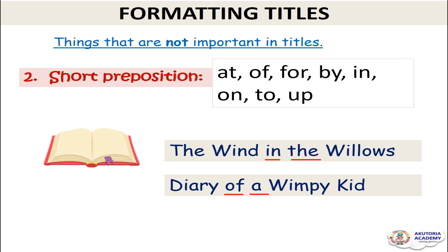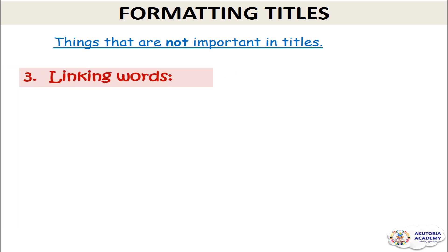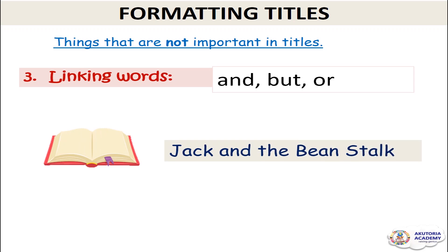We also don't capitalize linking words. Linking words are also called conjunctions, like 'and,' 'but,' and 'or.' For the title 'Jack and the Beanstalk,' 'and' is a linking word so we don't capitalize it, and 'the' is an article so we don't capitalize it. But 'Jack,' 'Bean,' and 'stalk' we capitalize because they are important words. So in titles: don't capitalize linking words, short prepositions, or articles — capitalize the first word, last word, and any other important word in between.